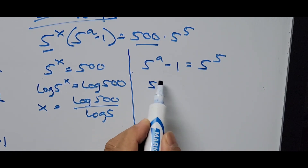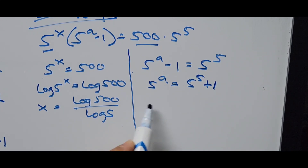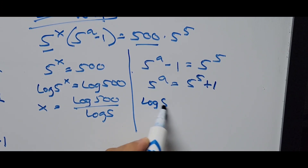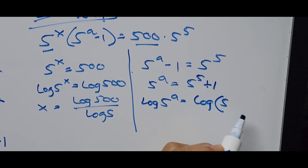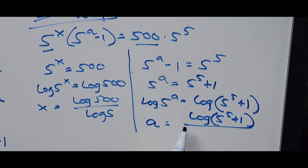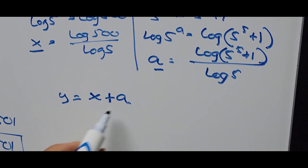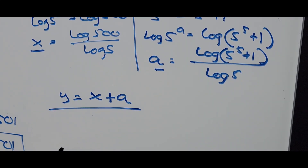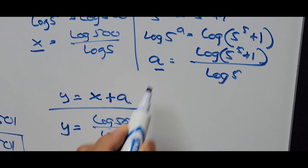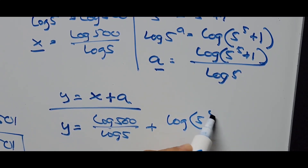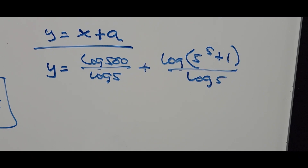For the other equation, 5^a equals 5^5 plus 1. Using logarithms: a equals log(5^5 plus 1) divided by log(5). Substituting x and a into y equals x plus a, we get y equals log(500) divided by log(5) plus log(5^5 plus 1) divided by log(5).